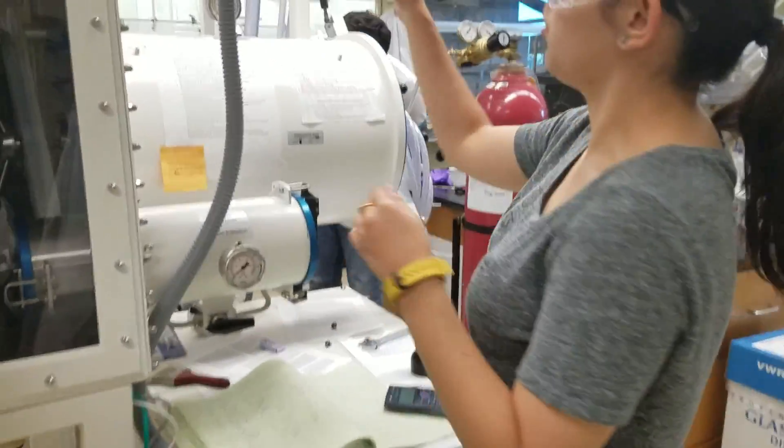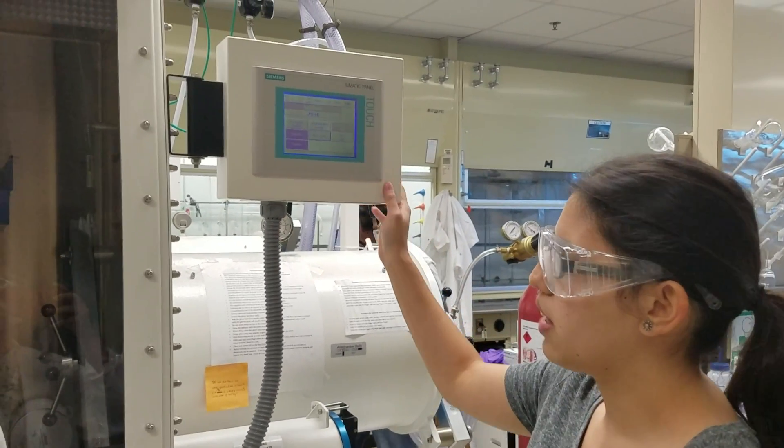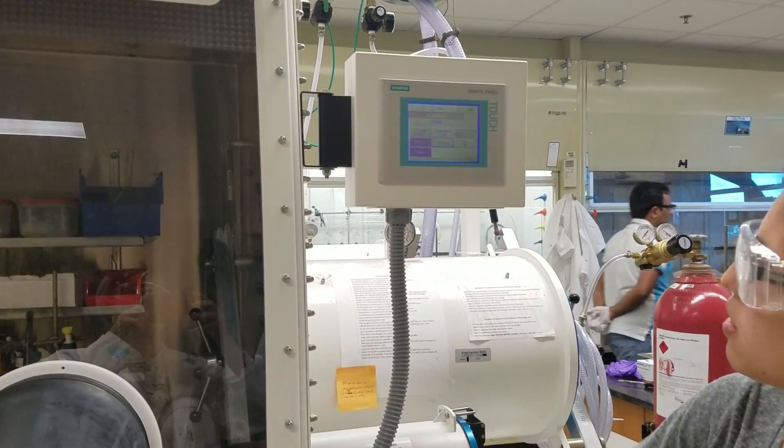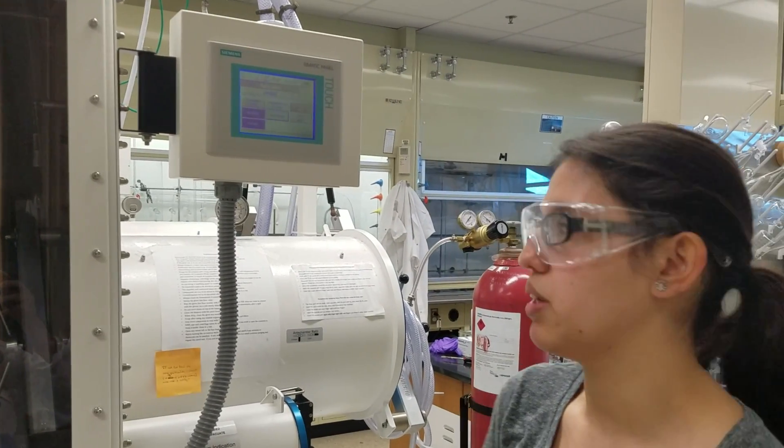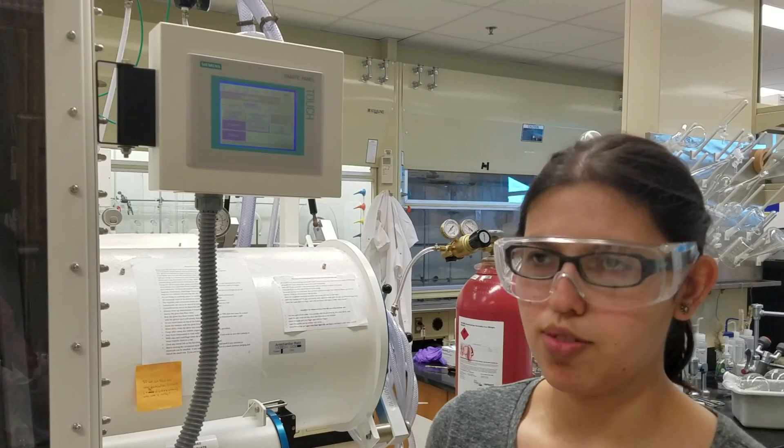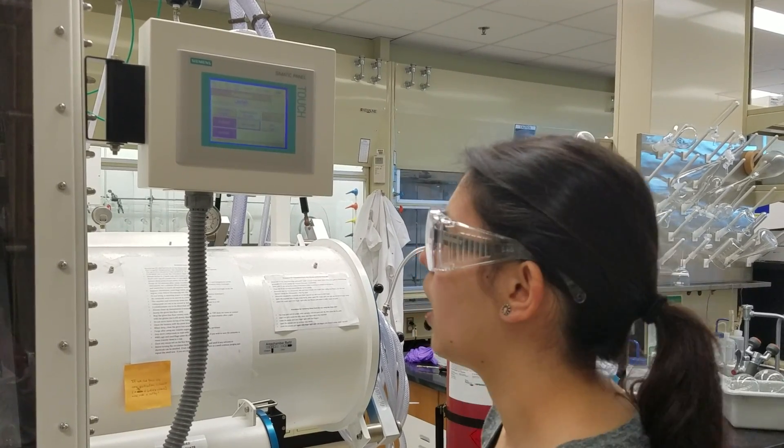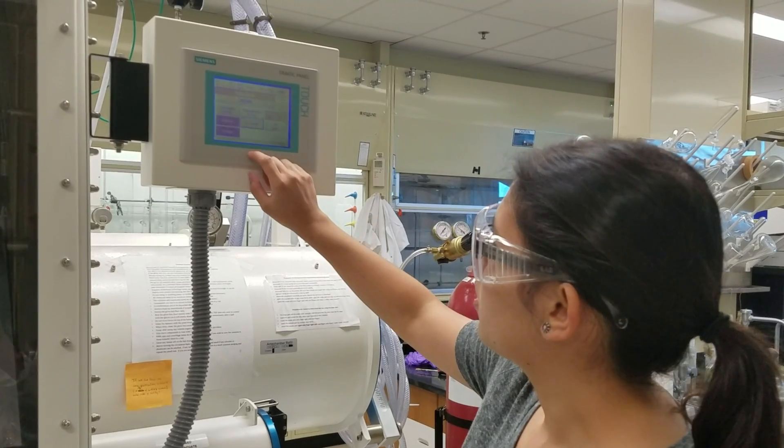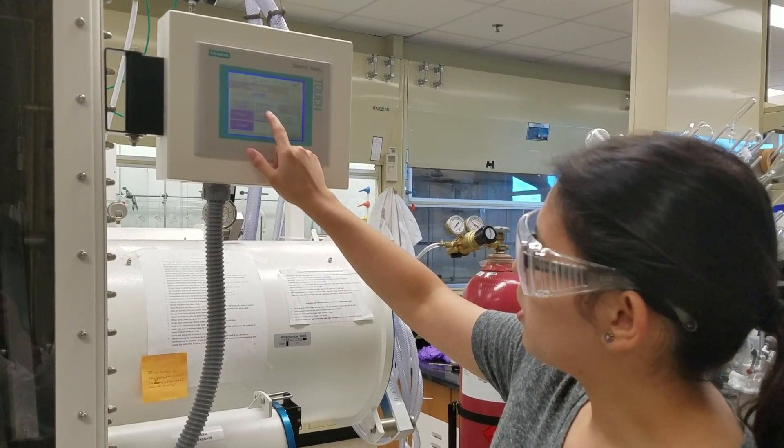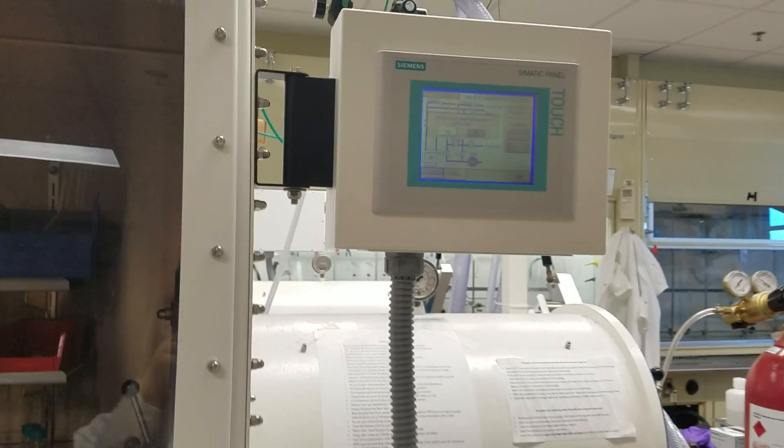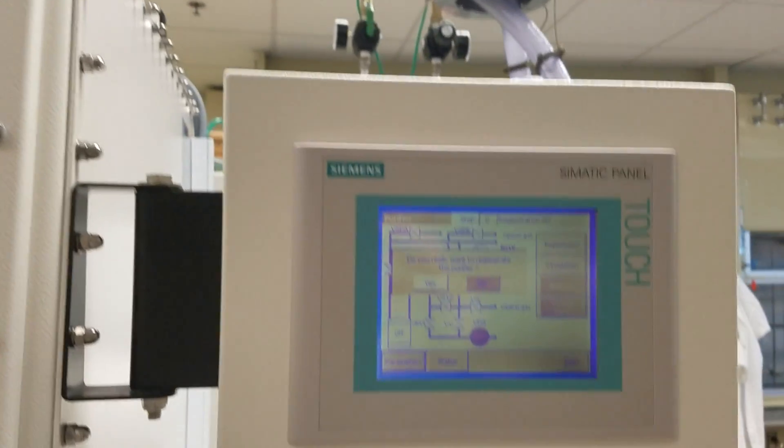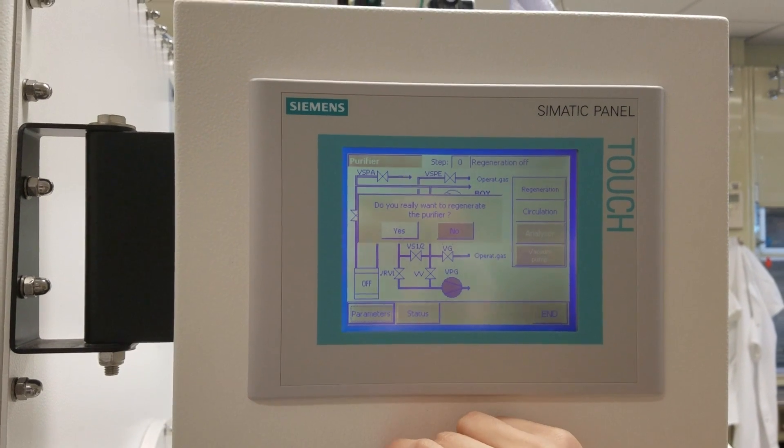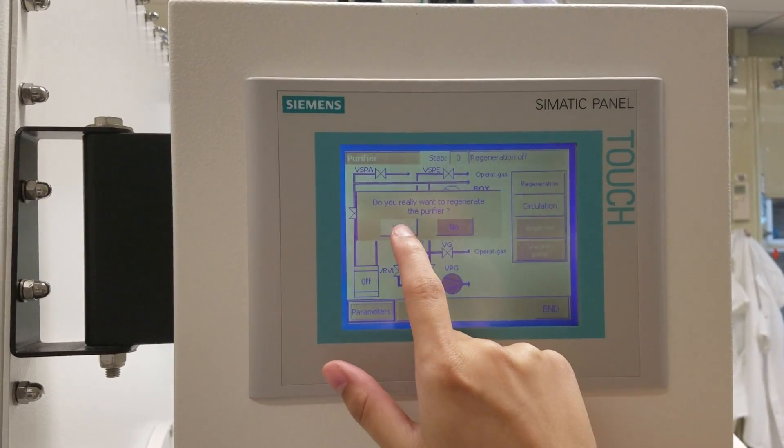So, to do a regeneration, you have to make sure that your glove box atmosphere is purged down to less than 0.1 ppm because it's going to stay with that atmosphere for 16 hours. You really don't want it to destroy the chemistry inside of the glove box. So, what you do is just go to regeneration purifier, upon which you'll see a window that says, do you really want to regenerate the purifier, you say yes.